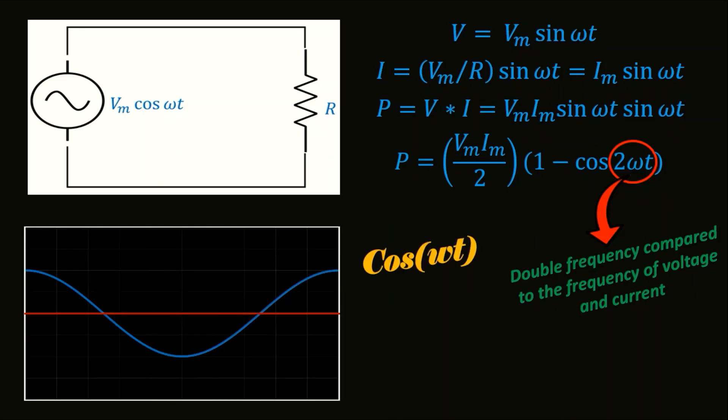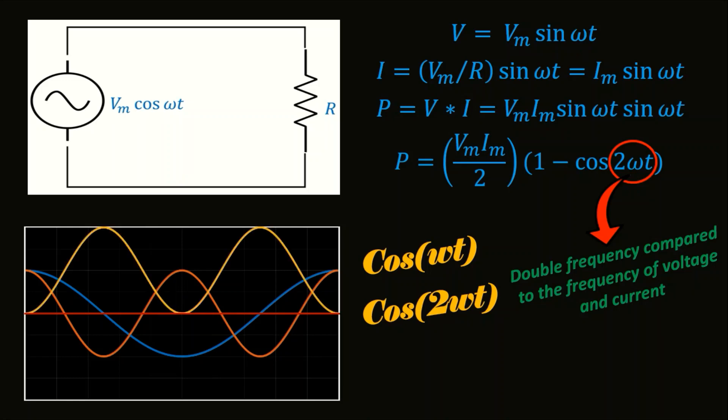cos ωt is plotted with this blue curve. And then the twice of this is obtained, the twice frequency is obtained with this curve. And 1 minus cos 2ωt will be first the mirror image or the inverse of cos 2ωt across x-axis. And then the constant one will cause a shift in upward direction.